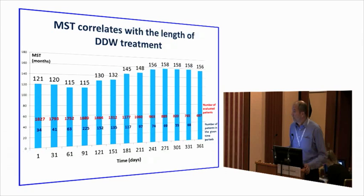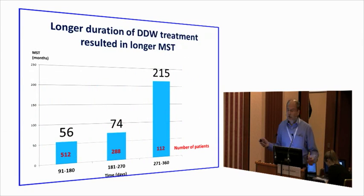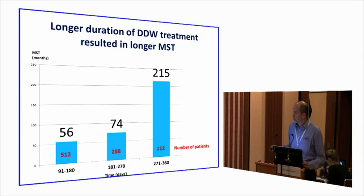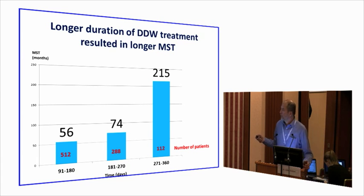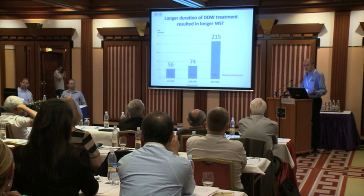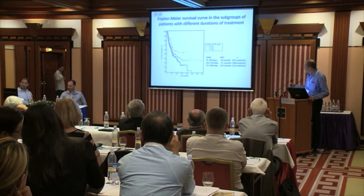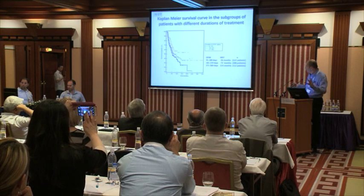Looking at this from another angle: over 500 patients who consumed DDW between 91 and 180 days had a median survival time of 56 months. Those who consumed an additional three months reached 74 months. Those who consumed longer than nine months had even higher median survival time. It is not a big surprise — the longer people consume DDW, the longer they will live. This is reflected in the Kaplan-Meier curves for these three groups.